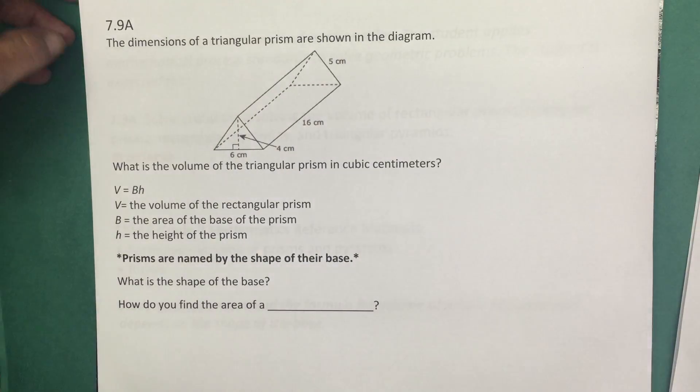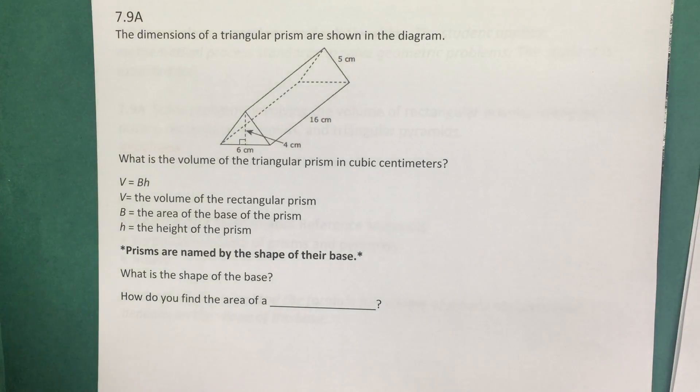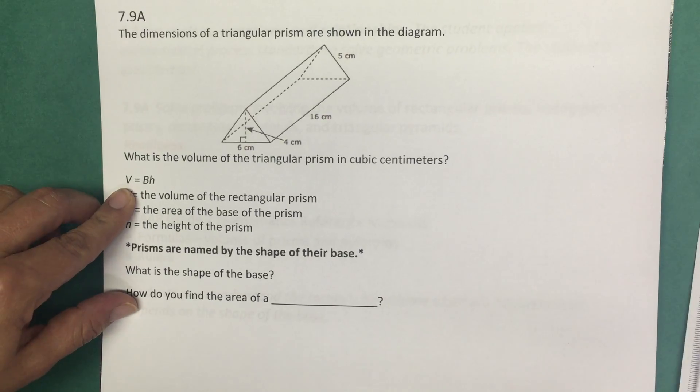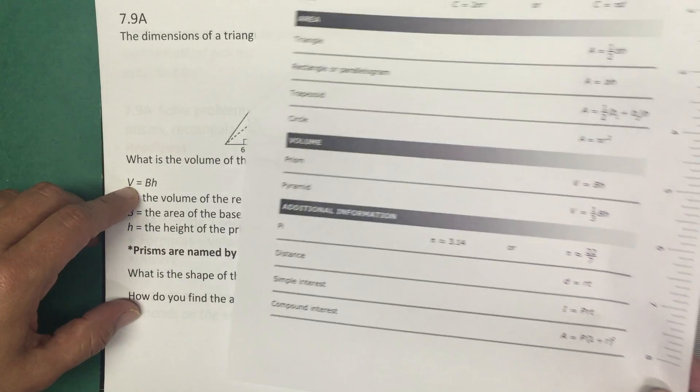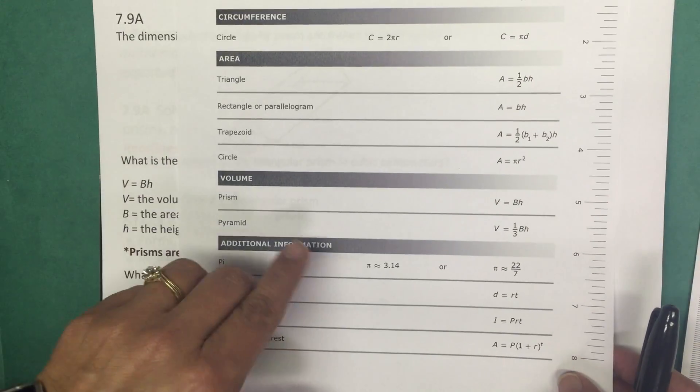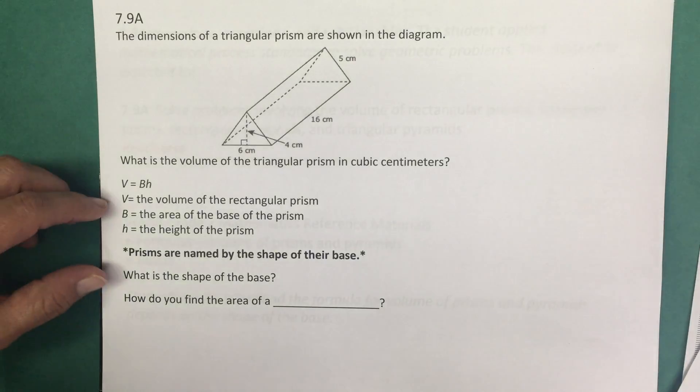We need to find the volume of this triangular prism. So let's think. We know we have a prism, so the formula for the volume of a prism is V equals B times H, and again you can see that that comes directly from the reference materials.